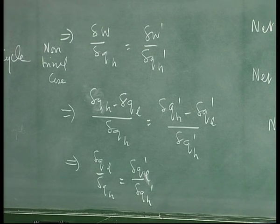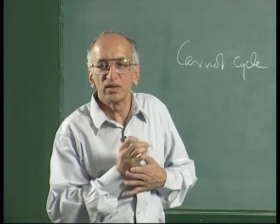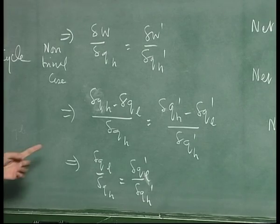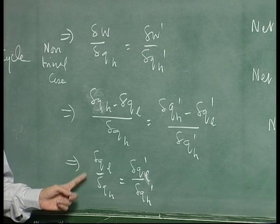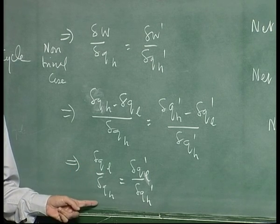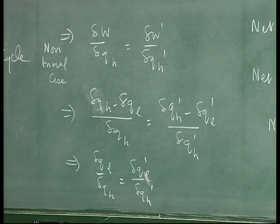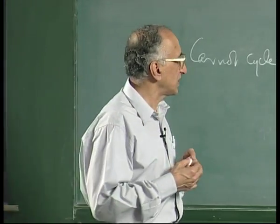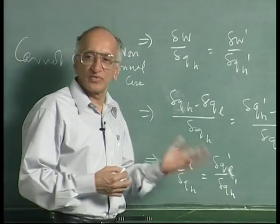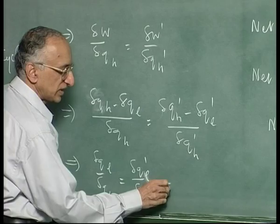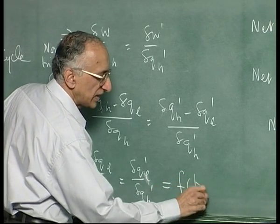Then comes the beauty of his assumption. He said: I do not care what the engines are or how they work. This ratio is independent of the type of engine and depends only on Q_L and Q_H. Therefore it must depend only on the temperatures of the source and the sink, because the only characteristic of each is its temperature — its degree of hotness. So this ratio is equal to some function f of T_H and T_L. I do not know the form of the function yet.